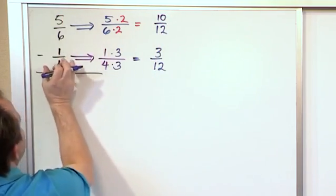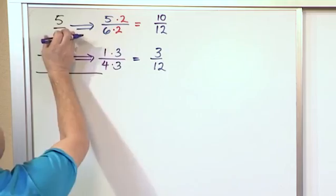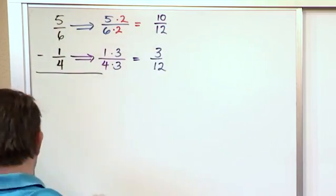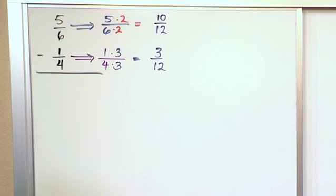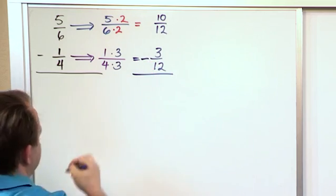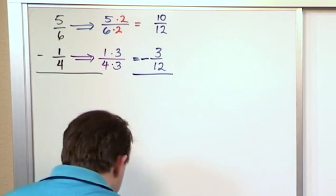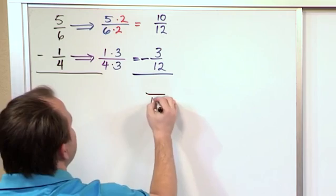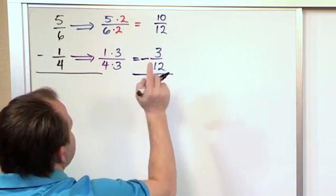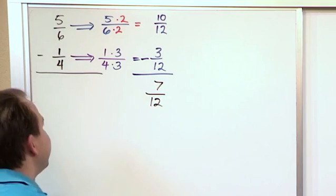I have changed this fraction into 3/12 and I've changed this fraction into 10/12. I haven't changed what this fraction represents. These are equivalent, but they look different and they have a common denominator. So now I'm able to do the subtraction. I just put a minus sign here, draw a line. I have a common denominator so 12 just stays on the bottom. And on the top, 10 minus 3 is going to give me 7. So the answer is 7/12.